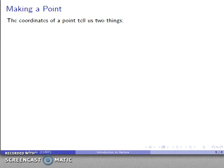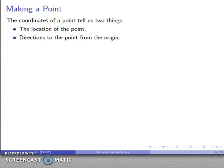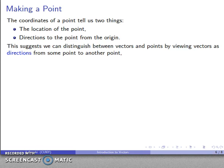Let's think about this: the coordinates of a point tell us two things of importance. They tell us where the point is, but they also give us directions for getting to the point from the origin. This suggests we can get value by making direction the important thing about a vector.